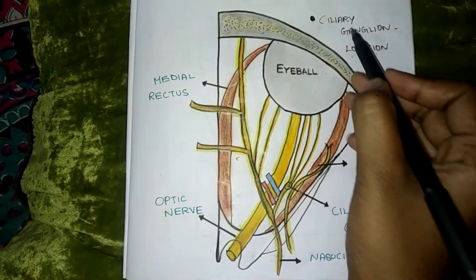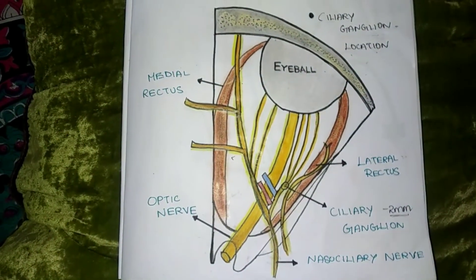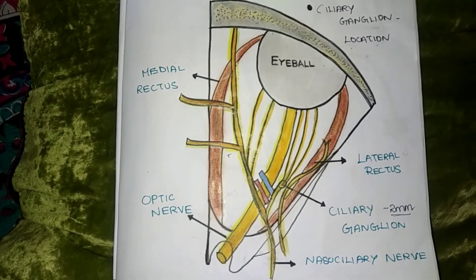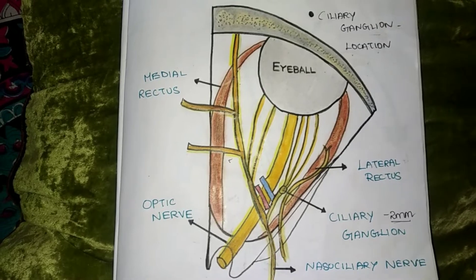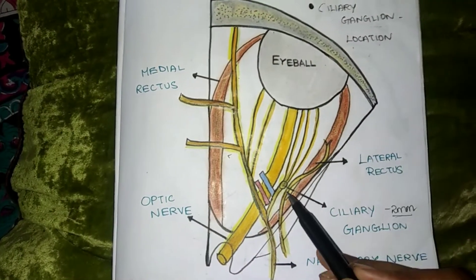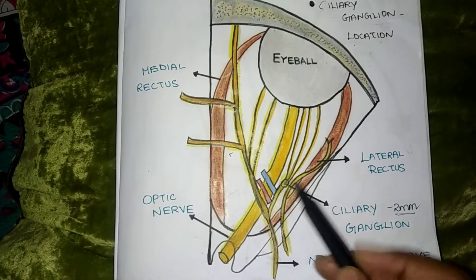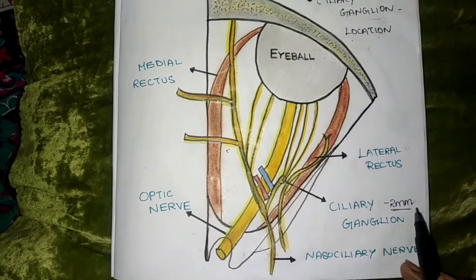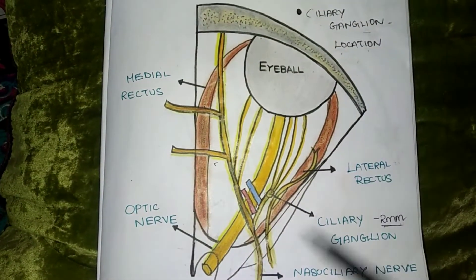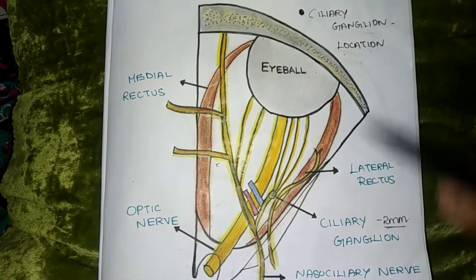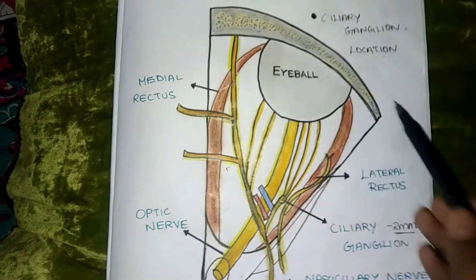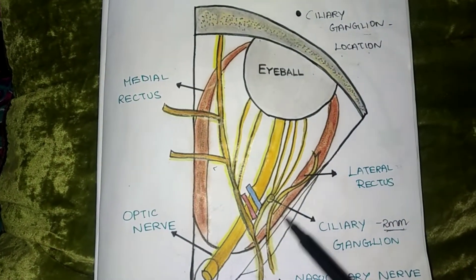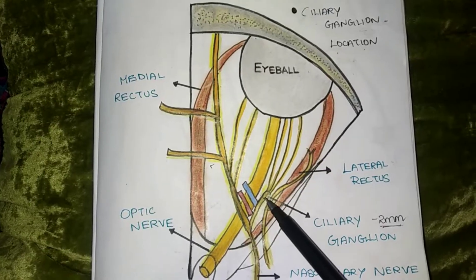Ciliary ganglion is a parasympathetic ganglion. It is two millimeters in diameter. It is located in the orbit. The orbit has a base and an apex, and the ciliary ganglion is located at the apex of the orbit.